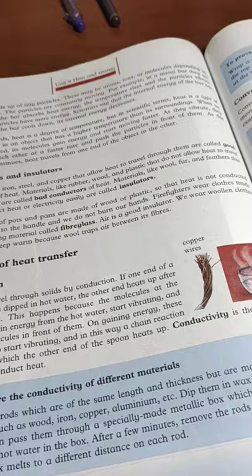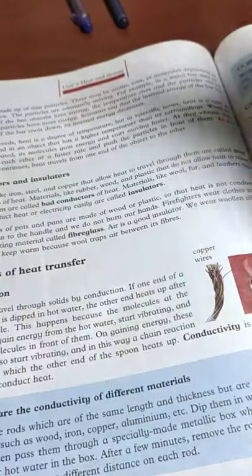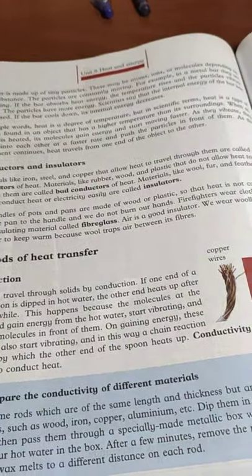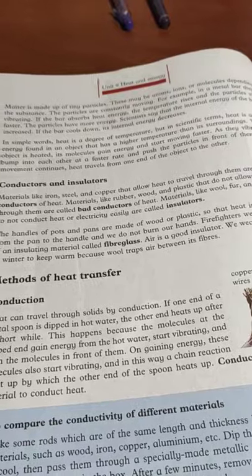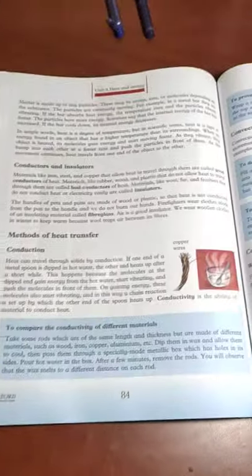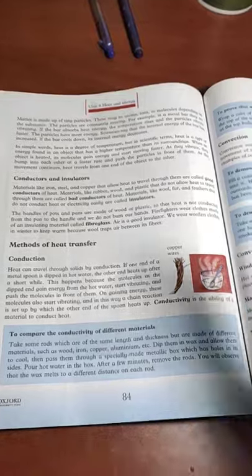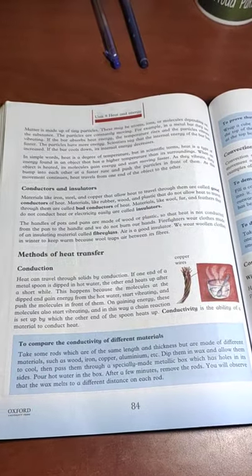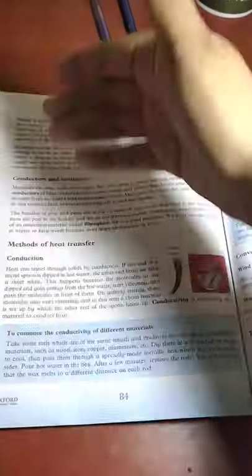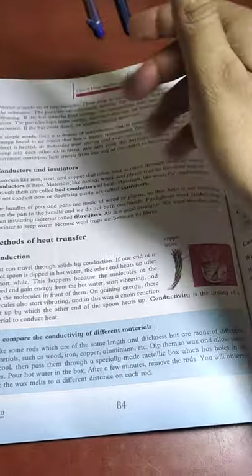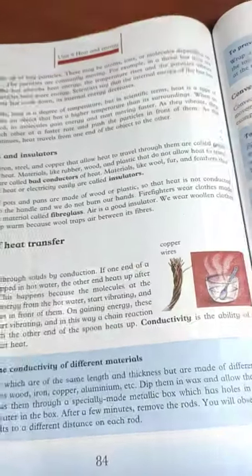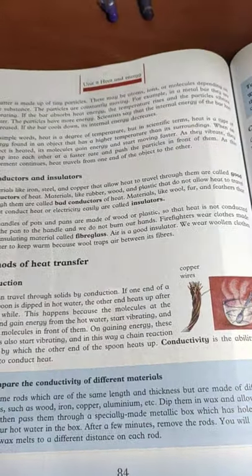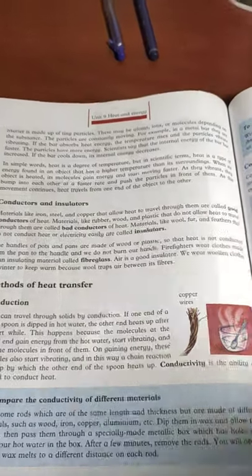Read what is a conductor and what is an insulator. I know you have read it in your previous classes, but I want you to go through this again. Methods of heat transfer - just read the first two paragraphs, and the conductors and insulators. This is your assignment. Thank you so much.